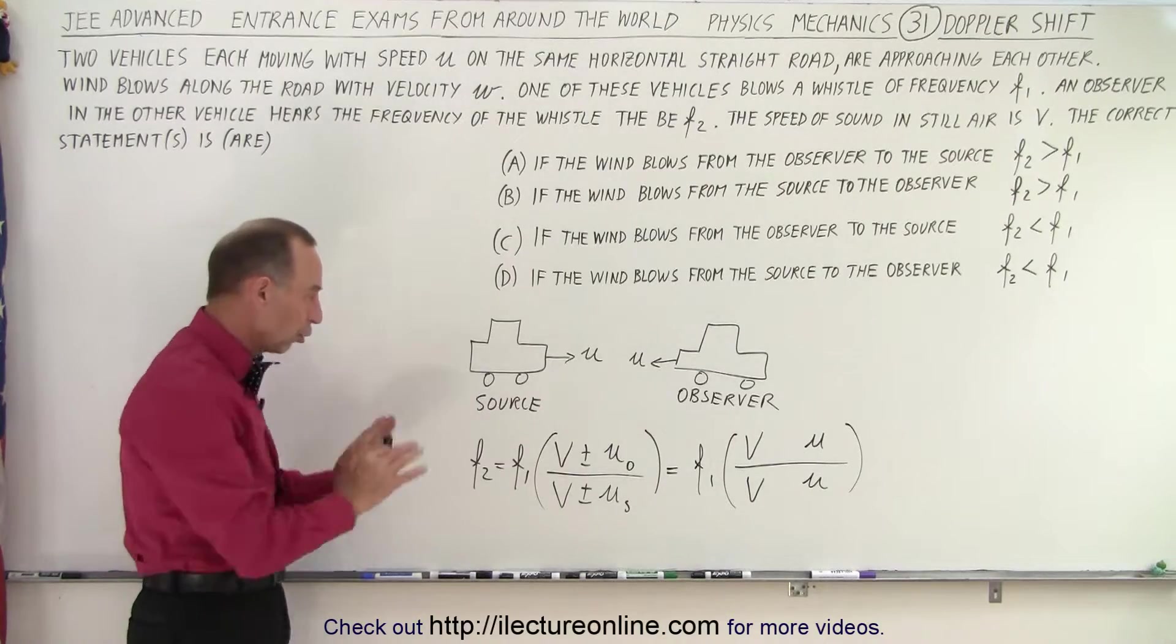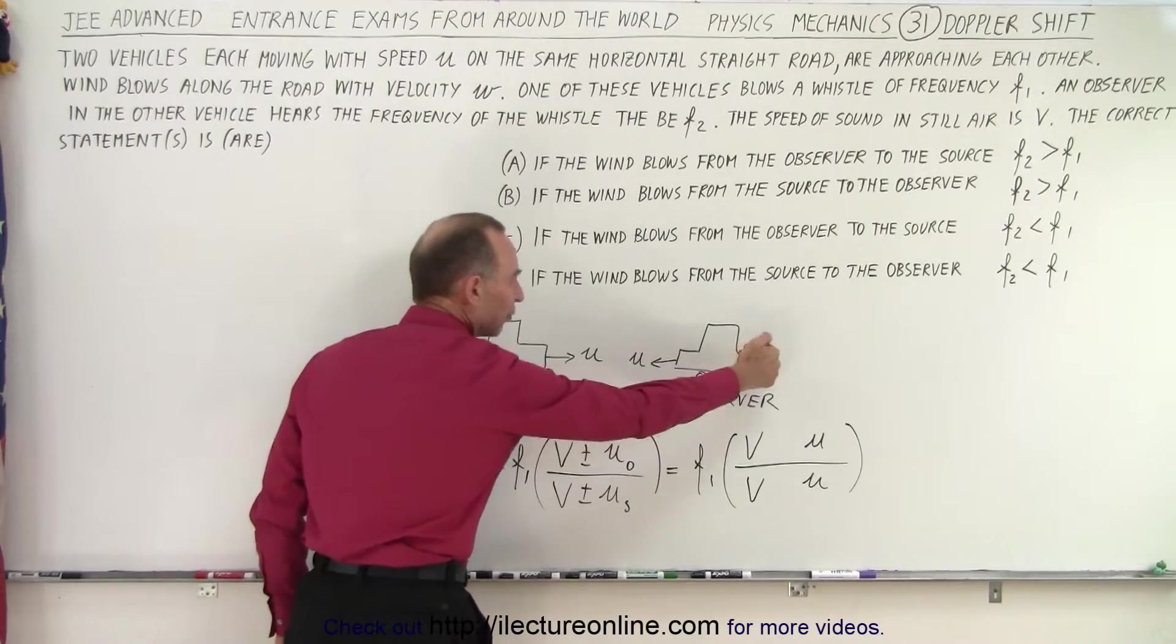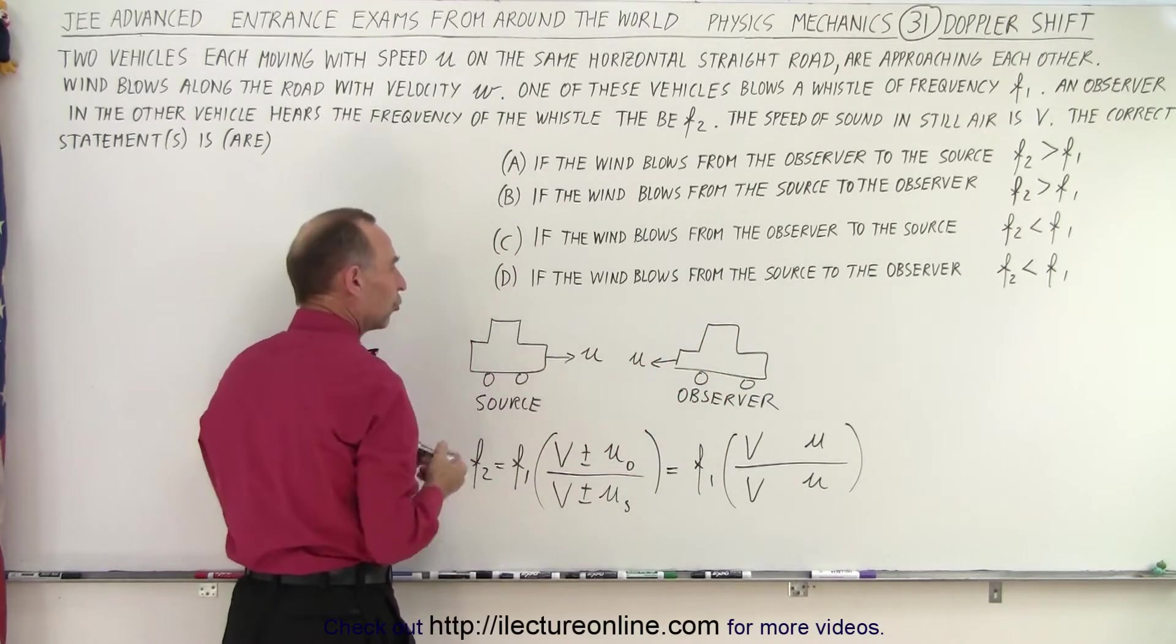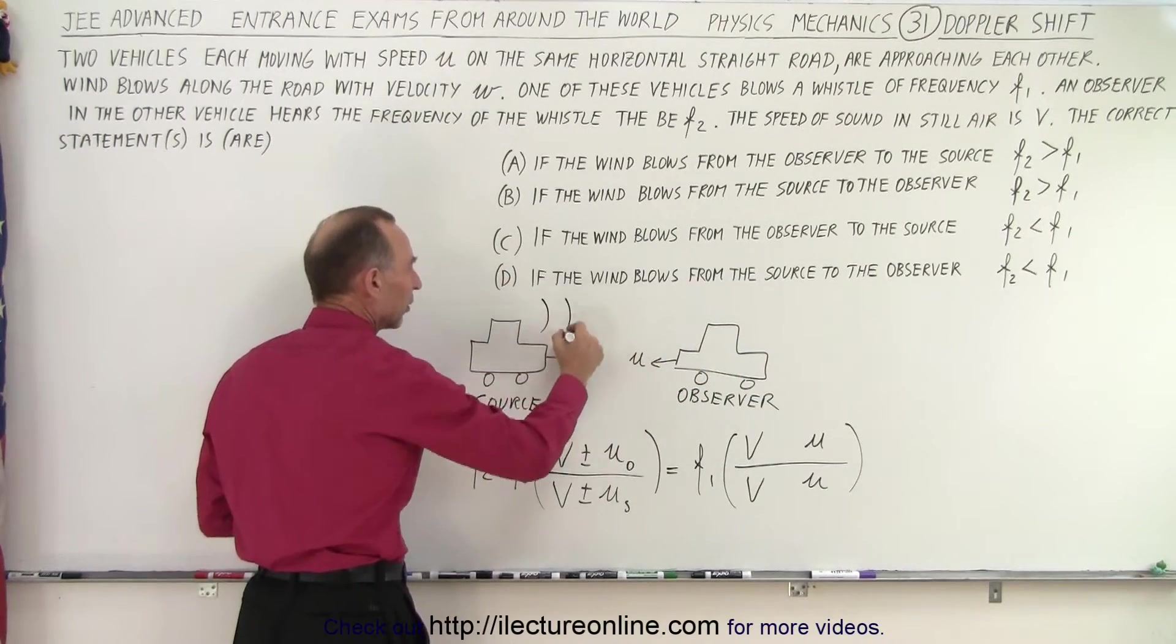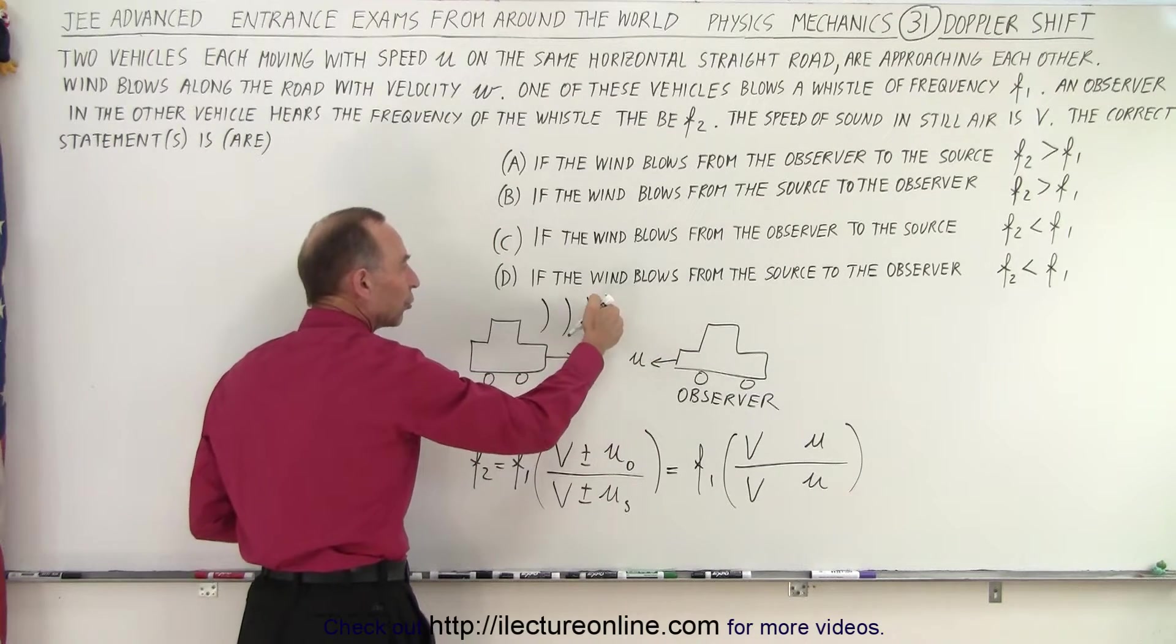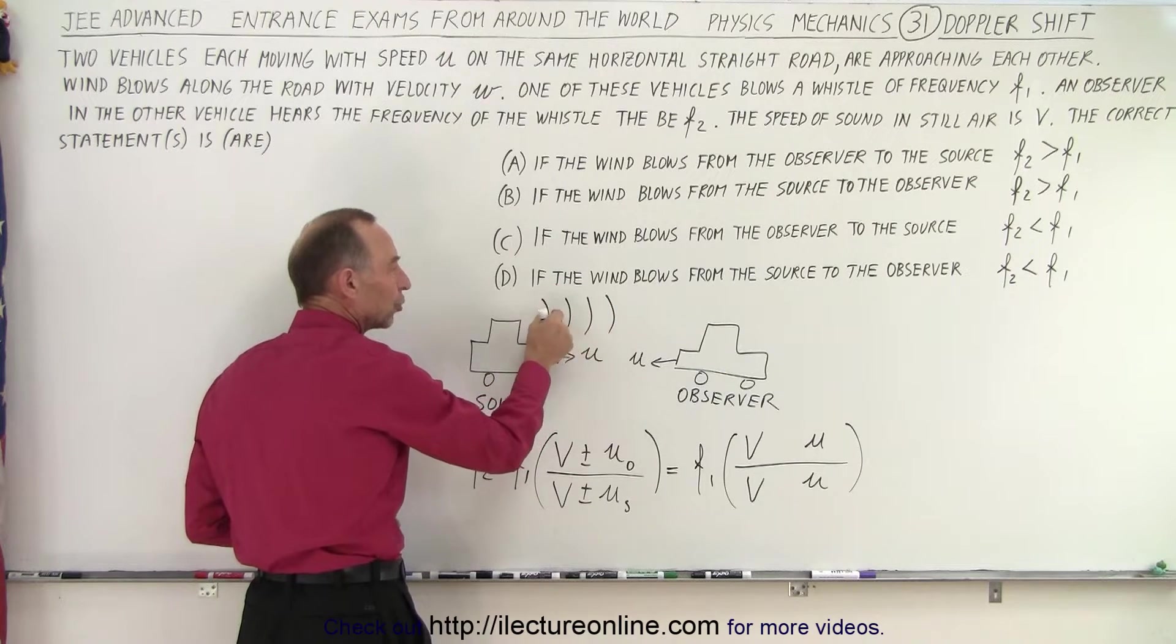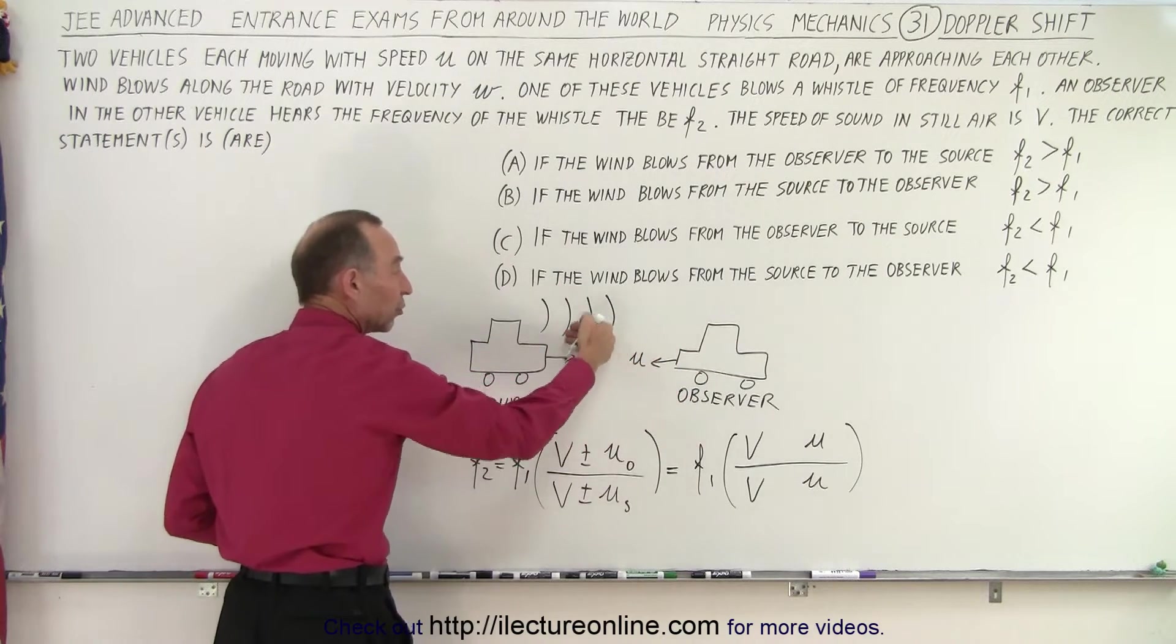So let's start with the observer, because that's at the top. If the observer is moving towards the source and the source is putting out sound like this, and the observer is approaching the source, then it's going to meet up with the waves more quickly. They will appear to be closer together because the observer is moving in this direction.